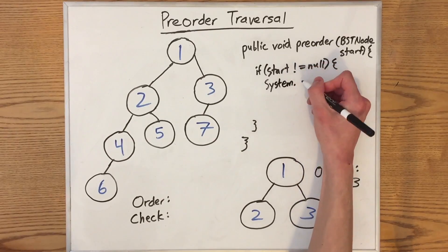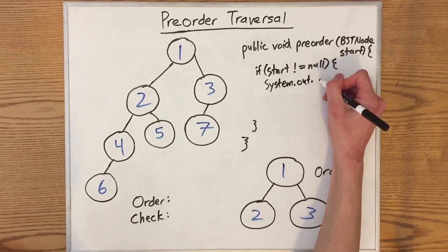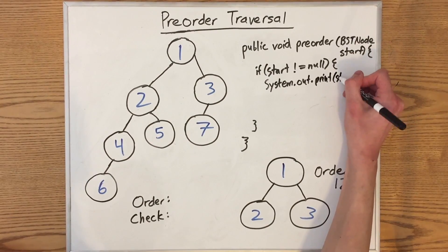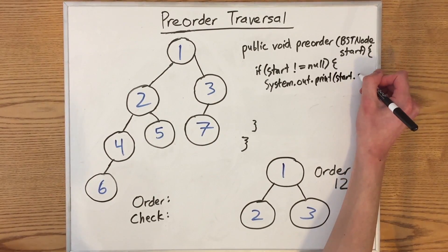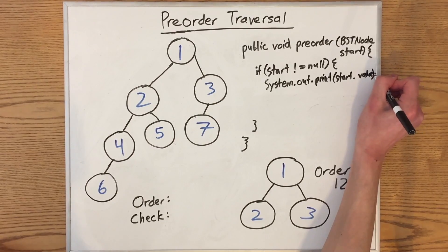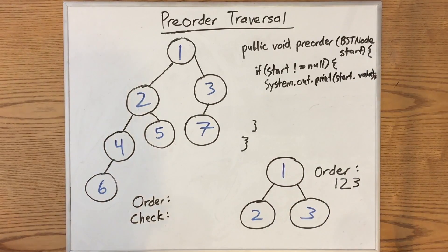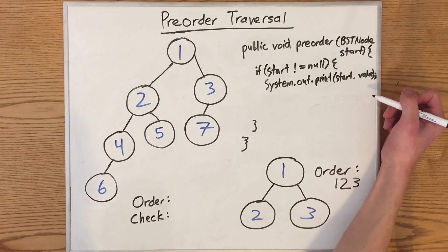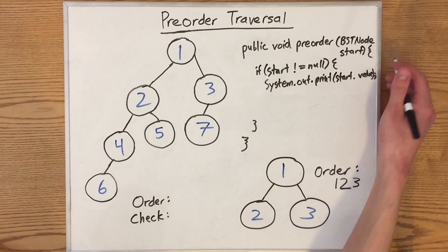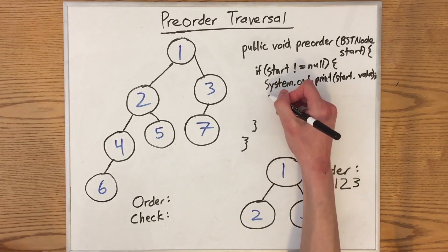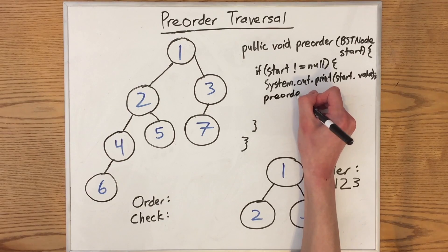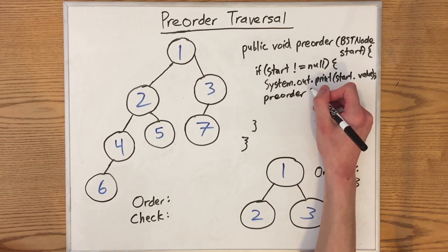So we can go system.out.print on start.value. After that, we recursively call pre-order on the left subtree. We know that BST nodes have a reference variable called left, so all we have to do is call pre-order on start.left.